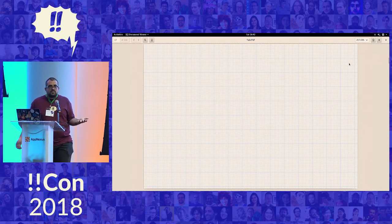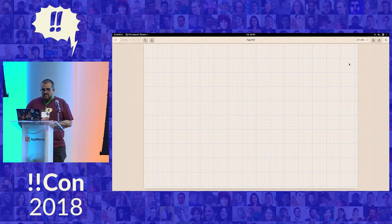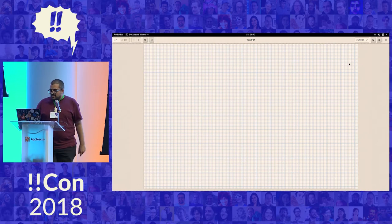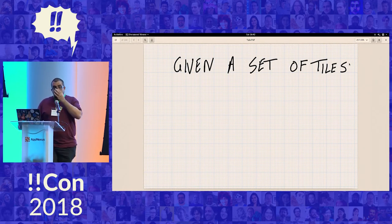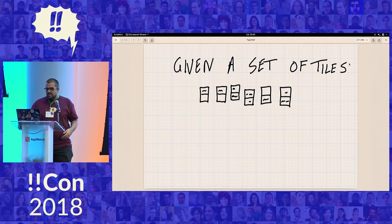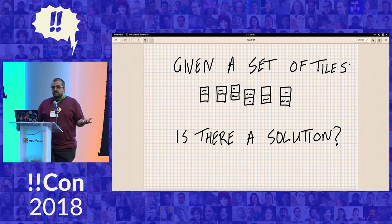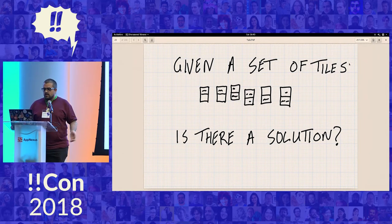And we're programmers, so we might think, oh hey, I can go and write a program to solve this. But we're going to get to it. No, you can't. So here's a question we're going to explore specifically, which is given a set of tiles, is there a solution or not? Not even can we solve it, not even let's solve it. Is there a solution or not?